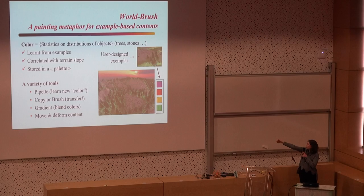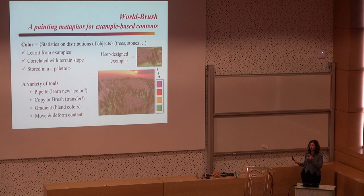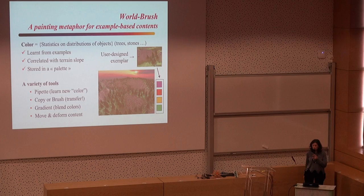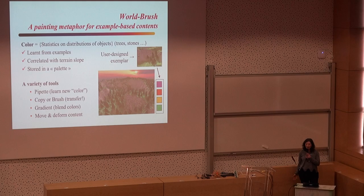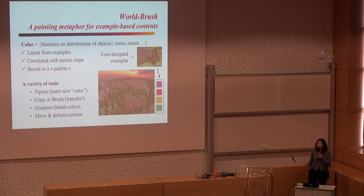World Brush is inspired from texturing methods — similar to learning texture from example, but using a painting metaphor to populate a virtual world with objects. The idea is that the user could not place all these stones on slopes, all these trees on flat areas, and all these blades of grass behind trees by hand — they need an automatic method. What you provide the user is a small exemplar: they design maybe eight trees and place a few stones on the slope. This will be used as an exemplar for learning the statistical distribution of elements.